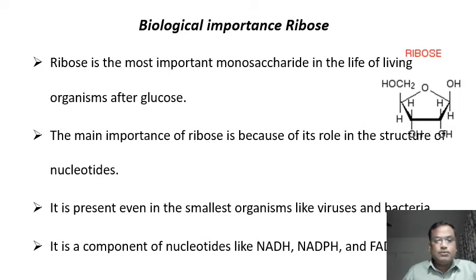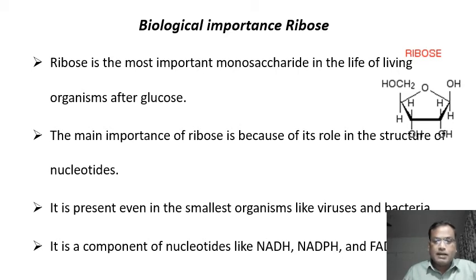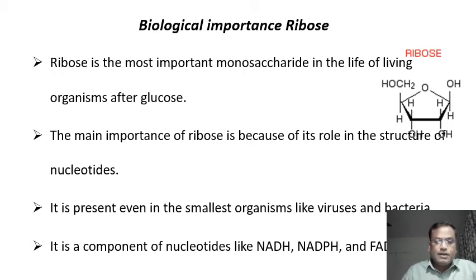Another important simple sugar is ribose. Ribose is a pentose sugar made up of five carbon atoms. This molecule is important because it is part of the genetic material — in RNA, ribose sugar is present, while in DNA, deoxyribose is present. Ribose is also a component of nucleotides like NADH, NADPH, and FADH.